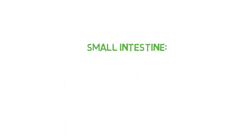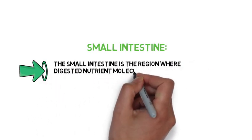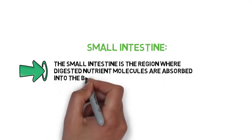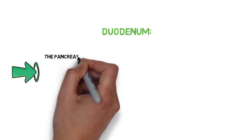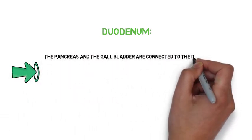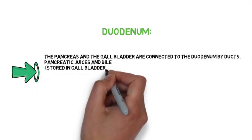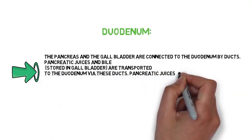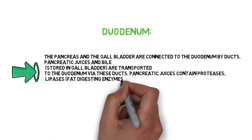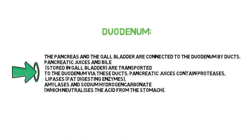Small intestine. The small intestine is the region where digested nutrient molecules are absorbed into the blood or lymph. The pancreas and the gallbladder are connected to the duodenum by ducts. Pancreatic juices and bile stored in the gallbladder are transported to the duodenum via these ducts. Pancreatic juices contain proteases, lipases (fat-digesting enzymes), amylases and sodium hydrogen carbonate, which neutralizes the acid from the stomach.